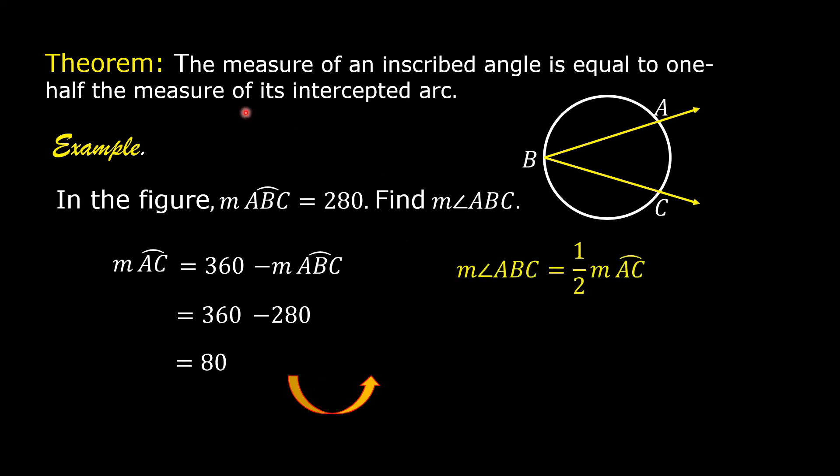According to the theorem, the measure of an inscribed angle is one half the measure of its intercepted arc. So the measure of angle ABC is one half the measure of arc AC, the intercepted arc. The measure of the intercepted arc is 80. So one half of 80 is equal to 40. Therefore, the measure of angle ABC is equal to 40.